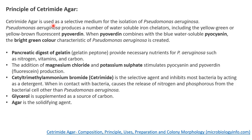Regarding the principle behind cetrimide agar: it is a selective media used for Pseudomonas aeruginosa, and Pseudomonas aeruginosa produces a number of water-soluble iron chelators including yellow-green or yellow-blue fluorescent pyoverdine. When pyoverdine combines with the blue water-soluble pyocyanin, a bright green color characteristic to Pseudomonas aeruginosa is created.